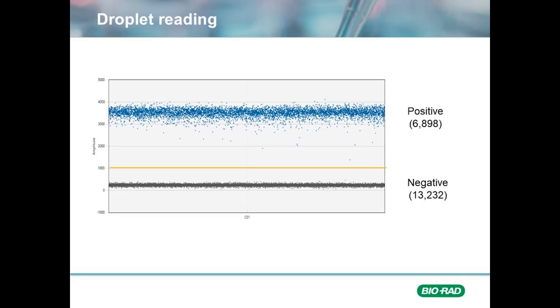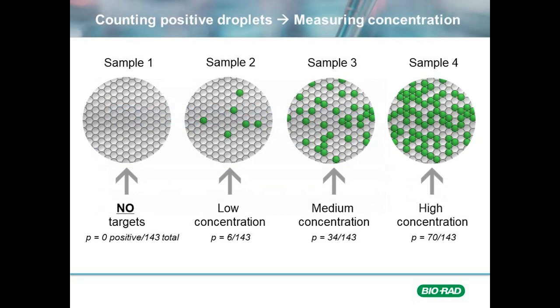As we count the number of positives, it is tempting to simply use that number and call the sample. In the example on the screen right now, using 6,898 positive droplets as the concentration of our target of interest would actually be incorrect. To illustrate how molecules are counted, here is a simplified view of the process. Let's pretend we have 4 samples and we split our reactions into 143 droplets for each sample. In the first sample, after amplification, we do not detect any positive events. It is therefore reasonable to assume that sample 1 is negative for our target of interest.